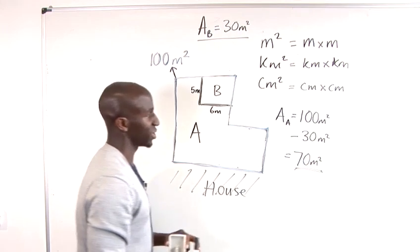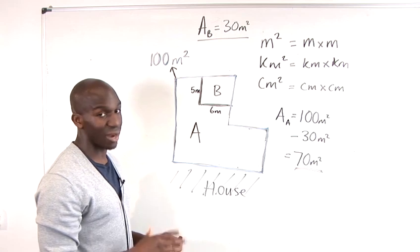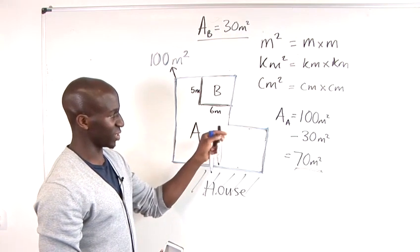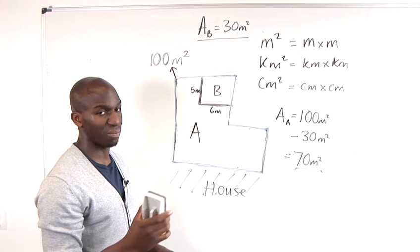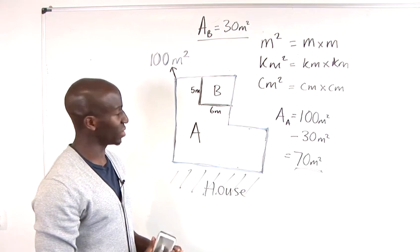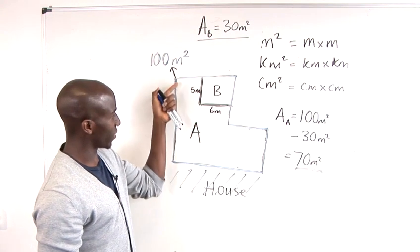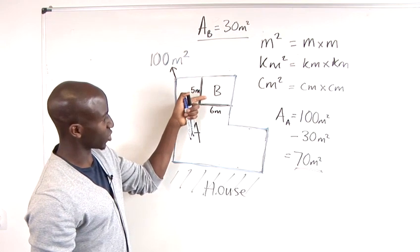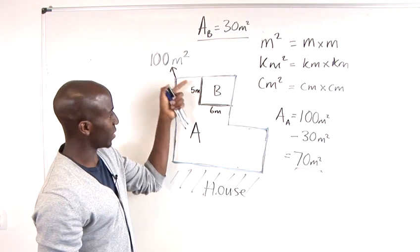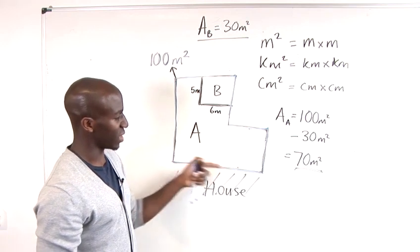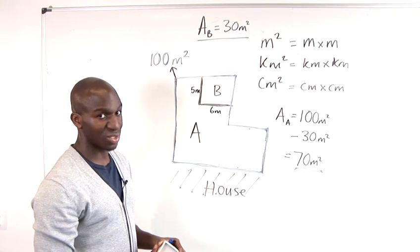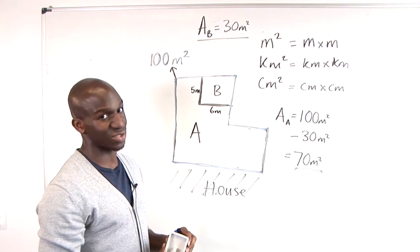So again just to recap, area is calculated by length times width. But as you can see in this question sometimes you can make just minor subtractions just like this one with the calculation of A. Just subtracting the smaller section which is B from the total section. That can also calculate the area of say a shape like this. So that's how to calculate surface area.